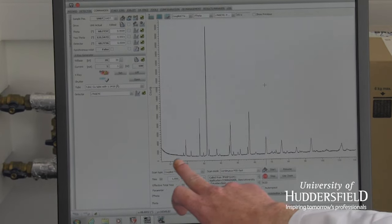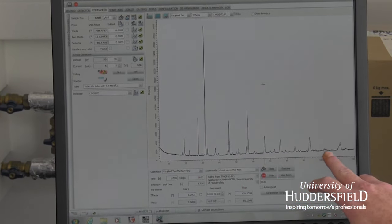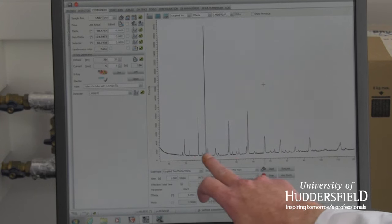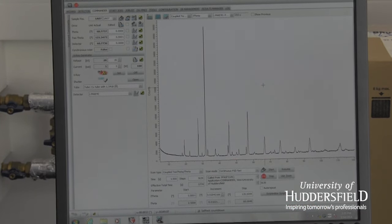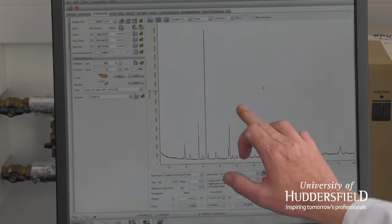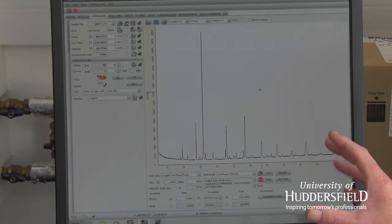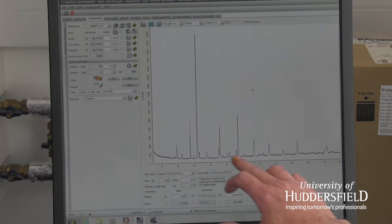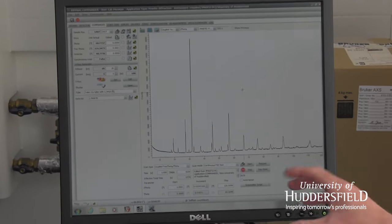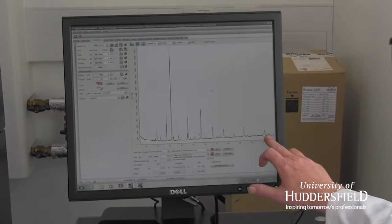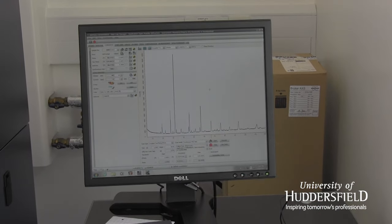This is the diffraction pattern that we get from that sample that I've just shown you. You've got peaks of different size in different spaces apart. The spacing and the size of the peaks is all fundamental to its molecular structure. You can work out from these where the atoms are arranged, in what position, in what order, just by analyzing all that data.